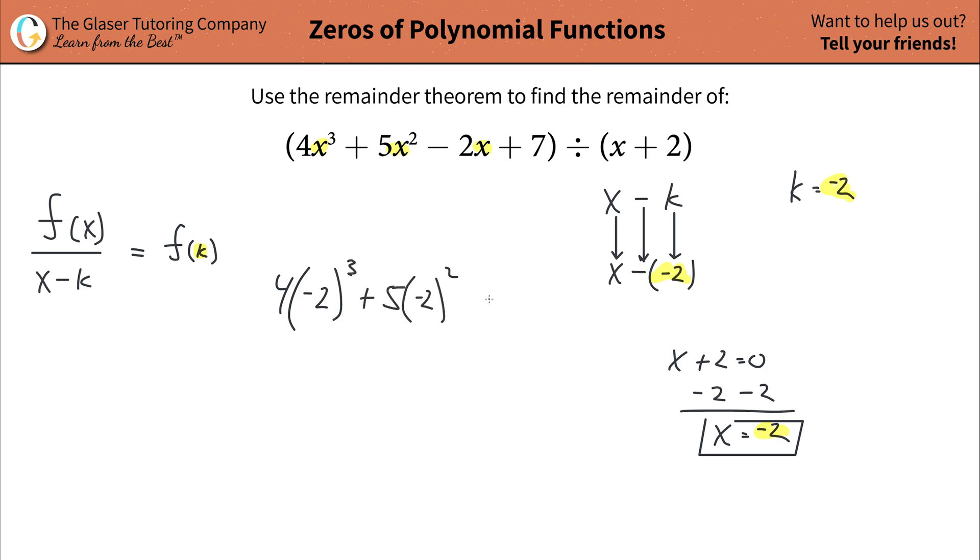So 4 times negative two cubed plus 5 times that negative two squared minus 2 times negative two plus 7, plug this into the calculator. And what do you get? I got a negative one.